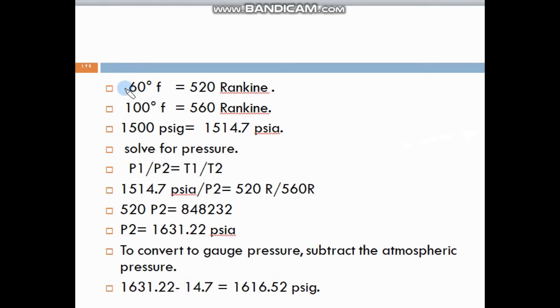Here, we change the 60 Fahrenheit to Rankine, and you know how to change it to Rankine. And the second temperature, we change it to Rankine. After that, we go to the pressure and change it from PSI gauge to PSIA, that means absolute pressure. Now we will write our equation.